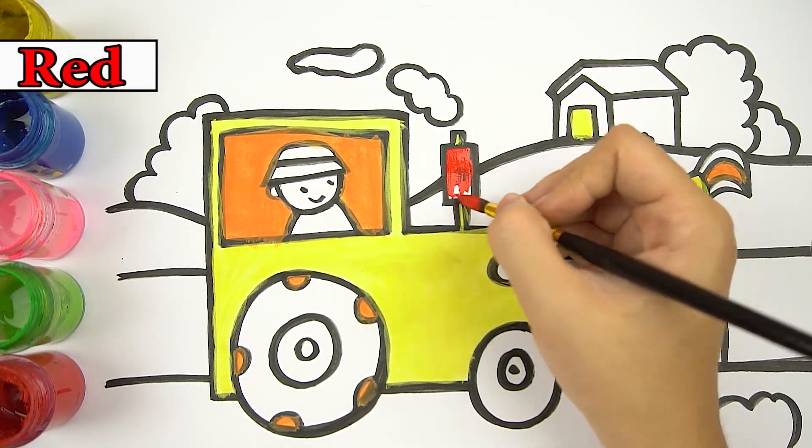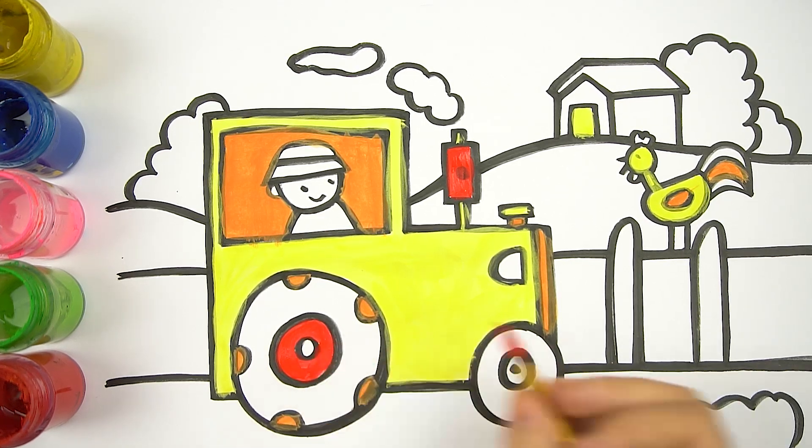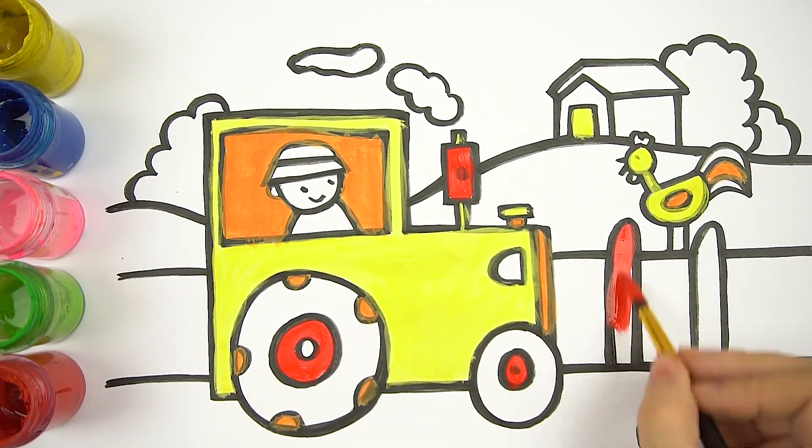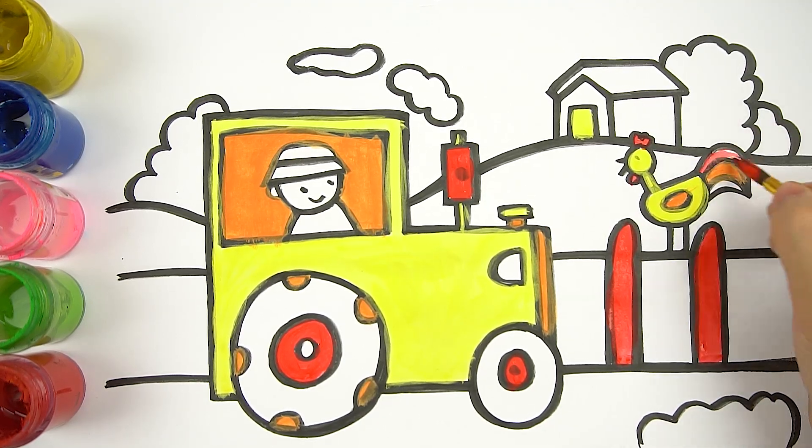For the chimney and the rim of our plot, I will also paint with red. And the fence, the roof, I continue to paint by red color.